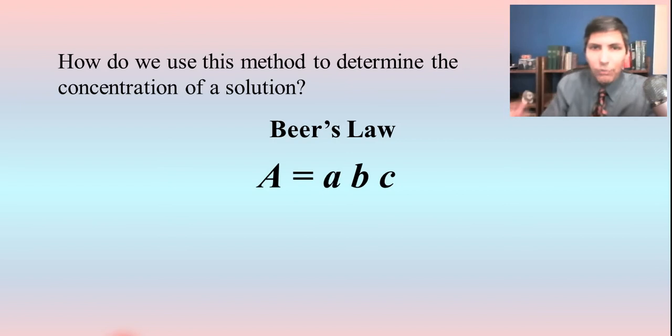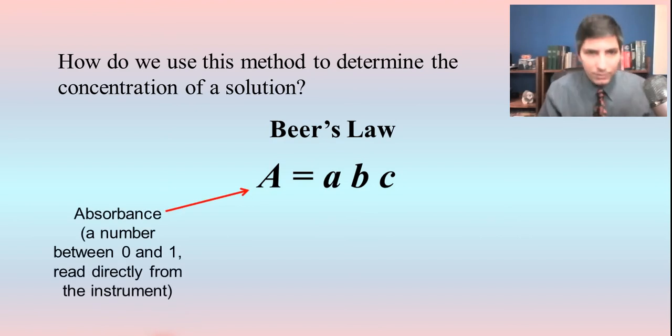A equals ABC. Now, sometimes this can be a little bit confusing because we have two As in here, but this is how the equation is written on the AP exam. So that's how I'm putting it here. The big A, the capital A, is the absorbance. Now, that's the number that's actually going to be given to you on the spectrophotometer. That's the digital readout or sometimes an analog readout with the needle pointing to it.